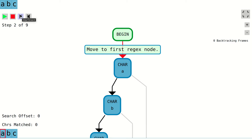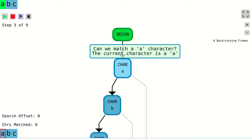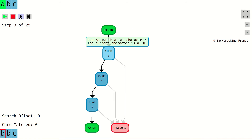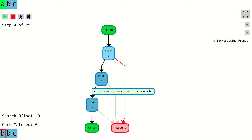The first node type checks for a specific character at the current position in the text that is being searched. If the character matches, we continue to the next node in the control flow graph. If it doesn't match, the control flow graph moves to the failure node.